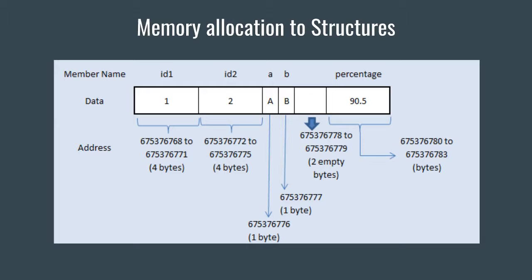Whenever you declare any structure, a concept called structure padding gets implicitly added. For example, if we have a structure with two integers, two characters, and one float — declared in that order: int id1, int id2, char a, char b, float — one extra padding gets inserted. The two integers occupy 4 bytes each (8 bytes total), the two characters occupy 2 bytes (total 10 bytes). Now if you want to store a float immediately after, the next memory location is 11, which is not a multiple of four.